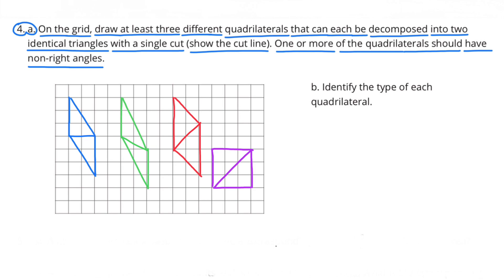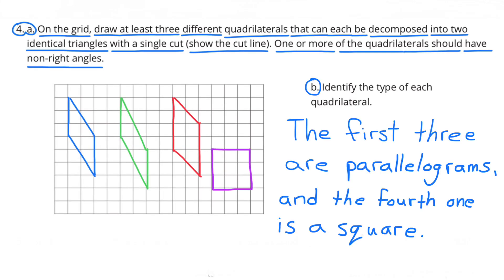B. Identify the type of each quadrilateral. The first three quadrilaterals are parallelograms, and the fourth one is a square.